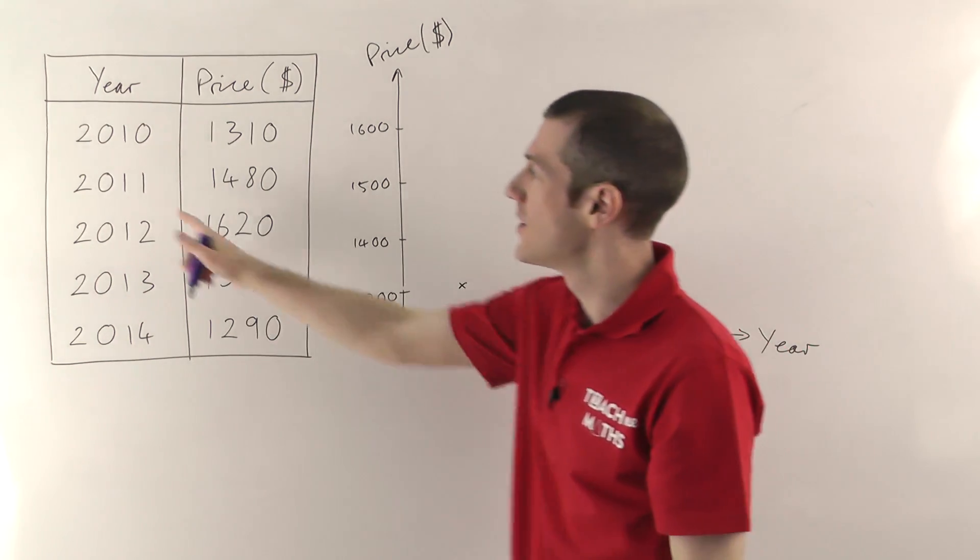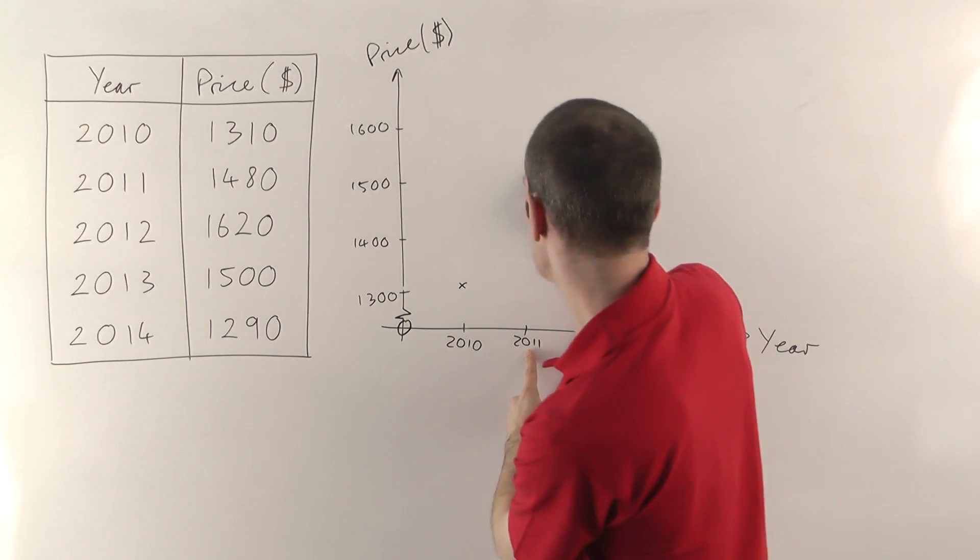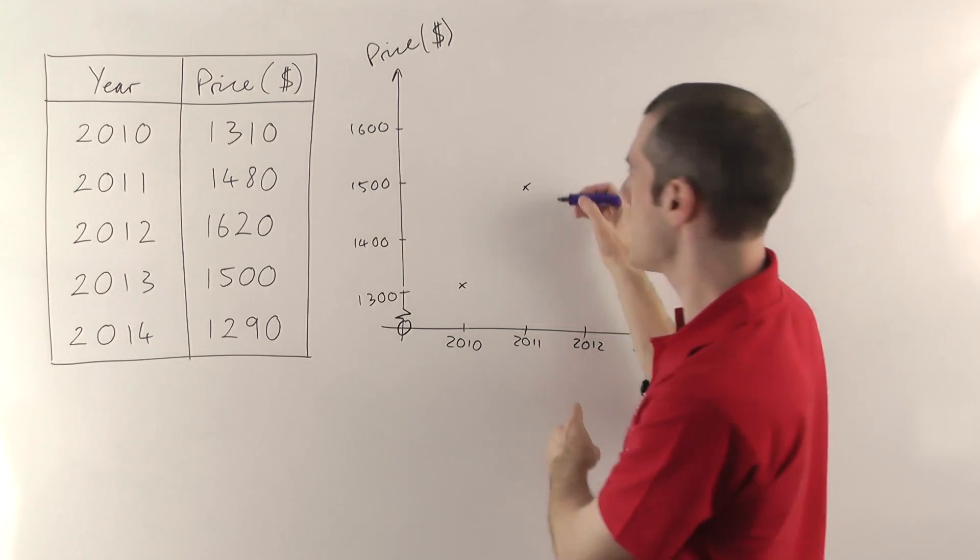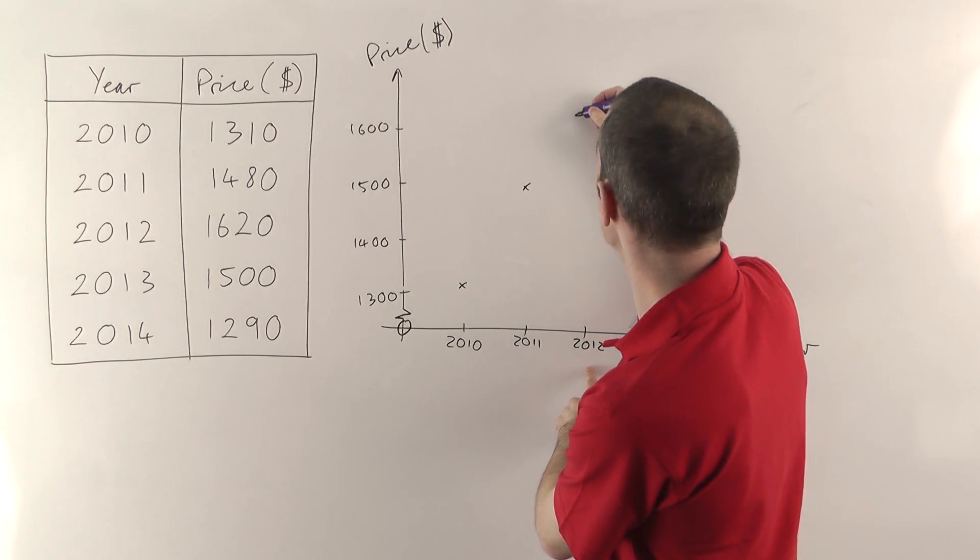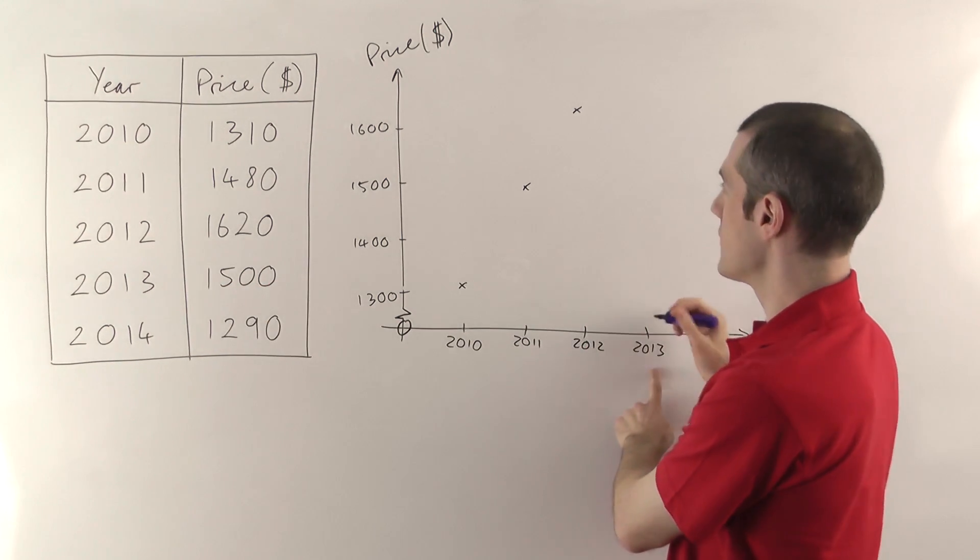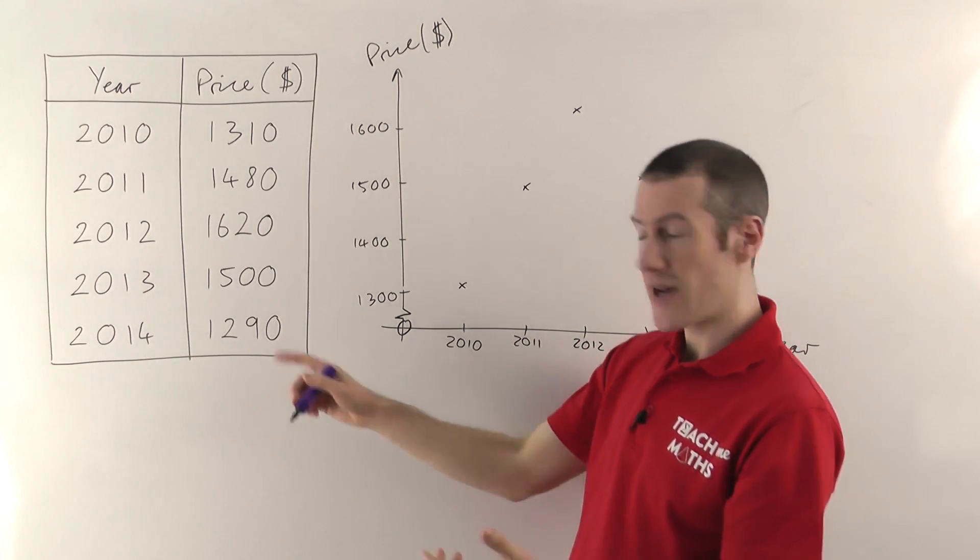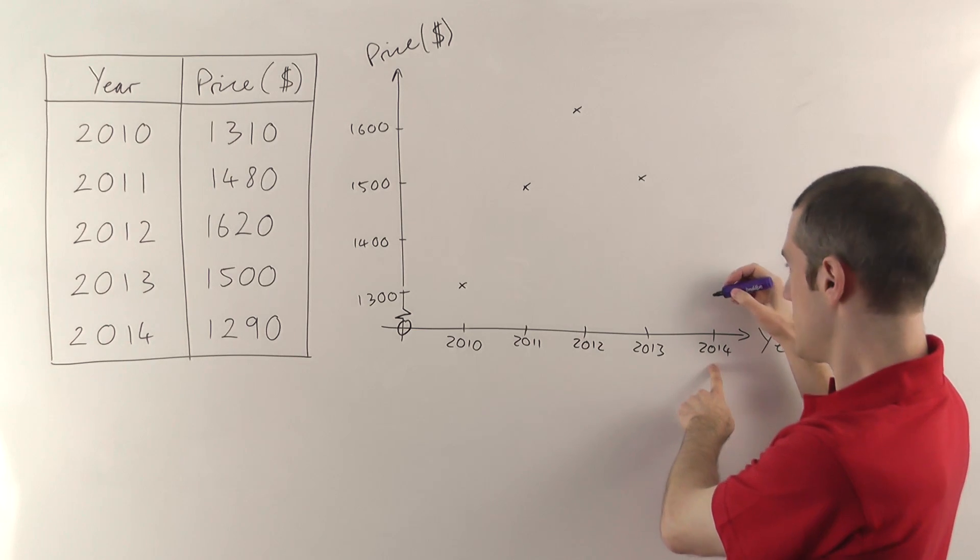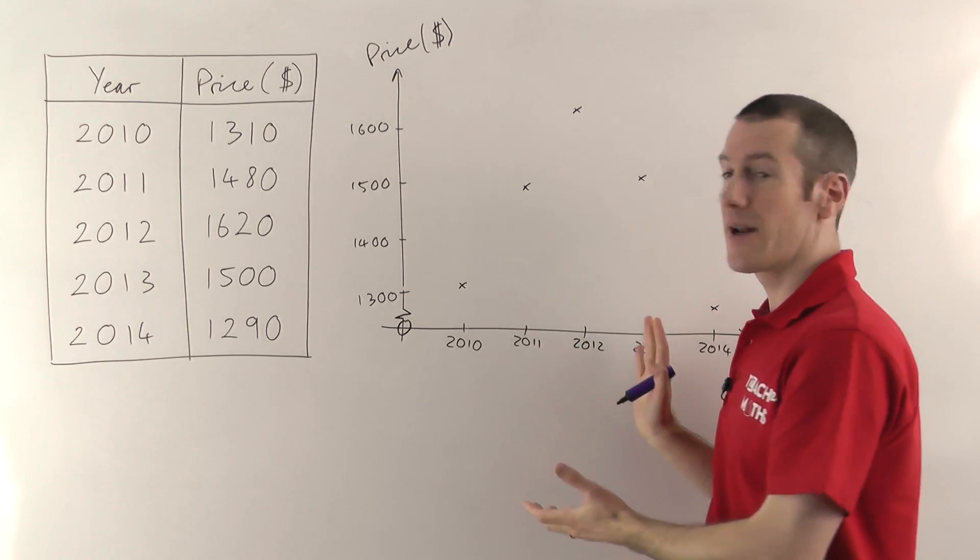And you go through the rest of them, put in the crosses. So 2011 should be 1,480, so more or less that's going to be about there. 2012, 1,620, so that's just above the 1,600 point there. 2013 is 1,500, so that goes bang on that one. And finally, 2014 is 1,290, so it's going to be just shy of the 1,300 one over there. So that's my line graph.